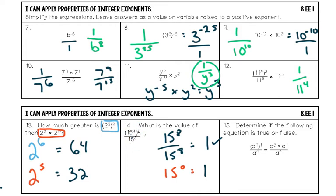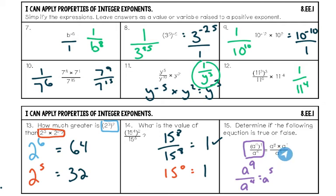Number fifteen: determine if the equation is true or false. On the left, simplify the top using the power rule — nine times one is nine — giving a to the ninth over a to the fourth. By the quotient rule, that's a to the fifth. On the right, a to the eighth times a to the first — same base multiplied, add exponents — gives a to the ninth over a to the fourth, which also equals a to the fifth. Both sides equal a to the fifth, so the equation is true.